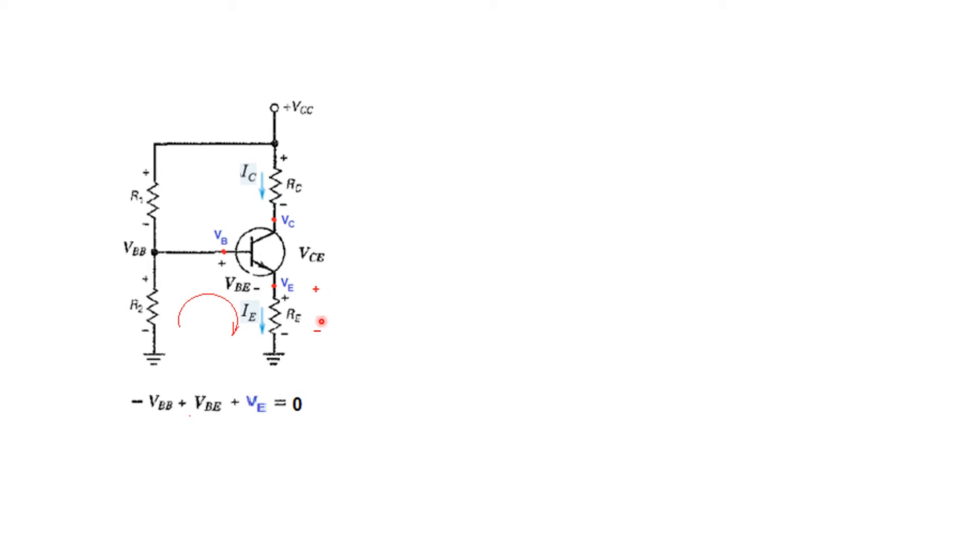We can also write another equation from this terminal. If we're going from here, then we get minus IE into RE. And this other loop is VE, so plus VE is equal to zero. That means from here we can say that VE is equal to IE RE.